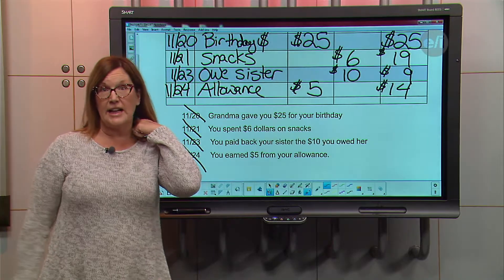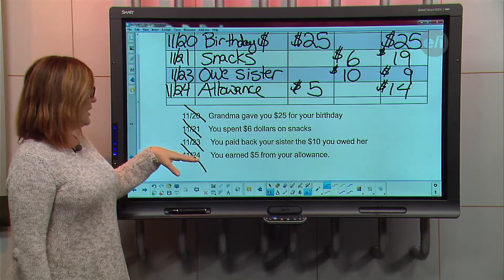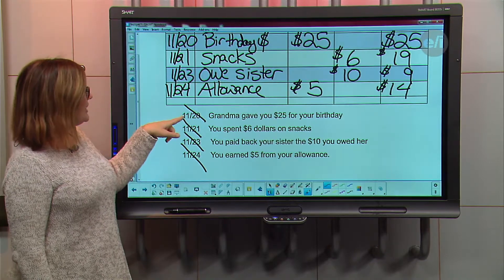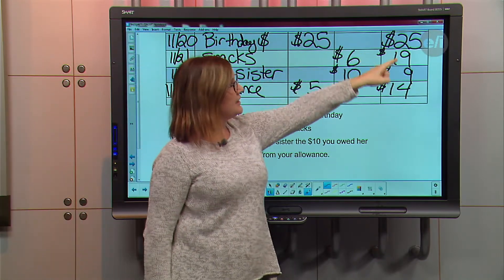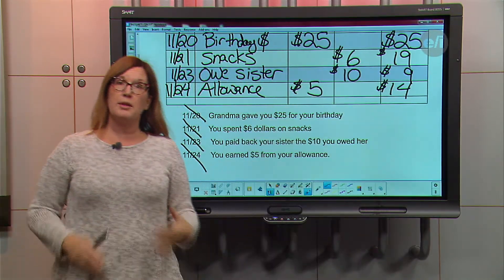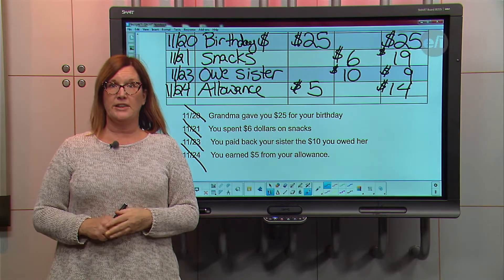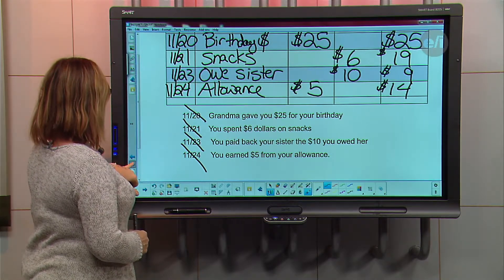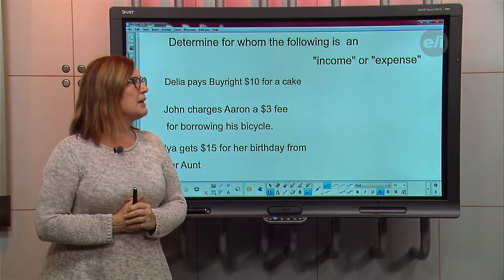So by November 24th, your balance is $14. The balances change on different days, and that's exactly why keeping a budget is done over time — your financial picture changes as you earn and spend.